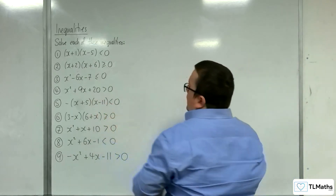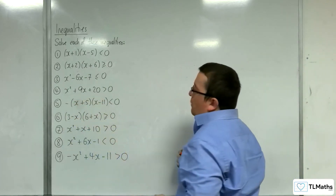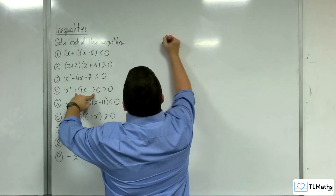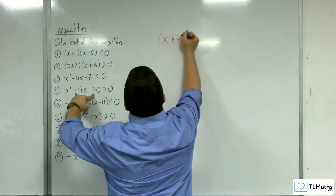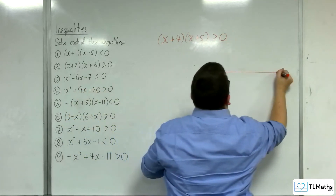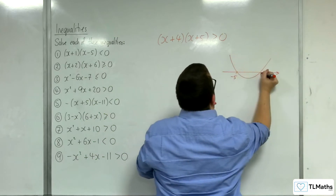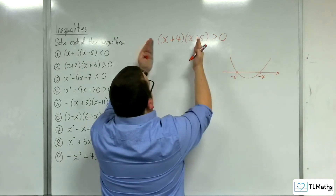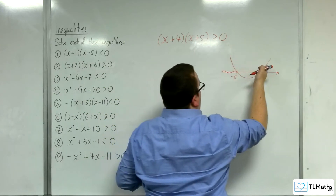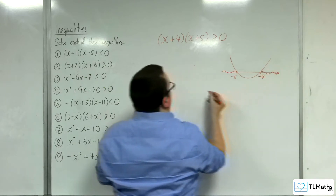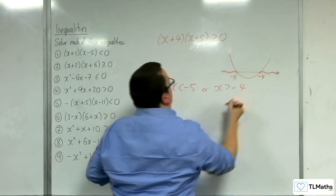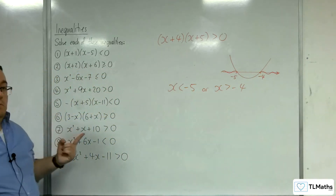Number four: x² + 9x + 20 > 0. Factorise to get (x+4)(x+5) > 0. Draw the parabola through −5 and −4. Where is the graph above the x-axis? That's the outer regions, so x < −5 or x > −4.